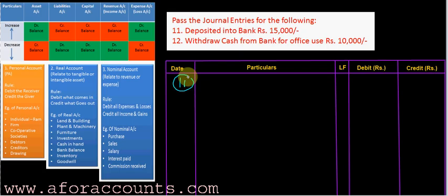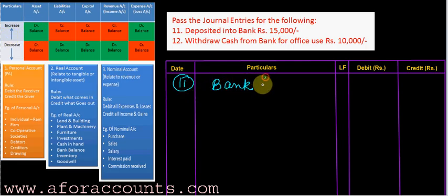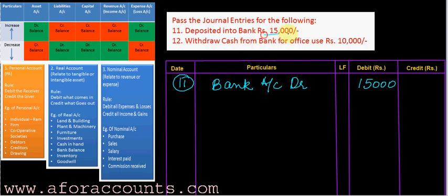The 11th entry: deposited into bank rupees 15,000. Bank is an asset which is increasing, so you will debit the bank account — bank account debit rupees 15,000. From where did you get these 15,000 to put into bank? You have reduced your cash balance by 15,000 and deposited it into bank. Such an entry is called a contra entry — when one side is bank and the other side is cash.